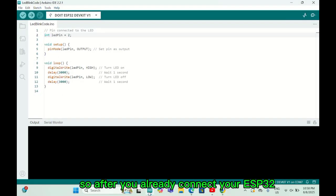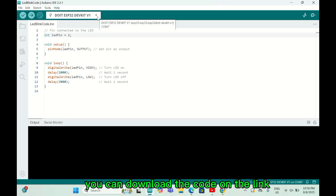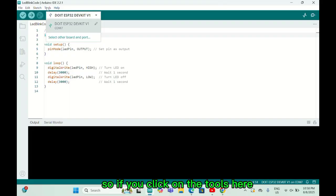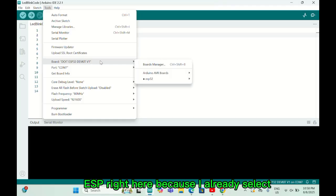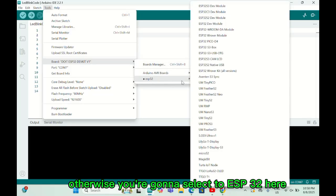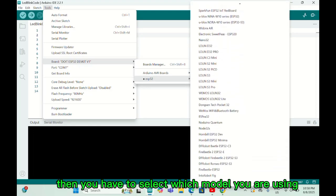After you already connect your ESP32 to your laptop, this is the code that you're going to see. You can download the code on the link. Make sure that you select your ESP32 module. If you click on the tools here you're going to see ESP32 because I already selected it. Otherwise you're going to select ESP32. There are a lot of versions here so you have to select which model you're using.